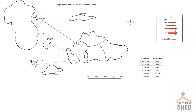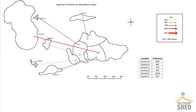From country D there was a migration of seven hundred and forty-four persons, which is slightly less than seven hundred and fifty, so I'll use the two millimeter line. From country E there were one thousand two hundred and sixteen persons — that's between one thousand and twelve fifty, so I'll use the four millimeter line. Finally, from country F there were five hundred and forty-seven persons, which is between five hundred and seven fifty, so I'll use the two millimeter line. And that's how you show a simple flowline map.